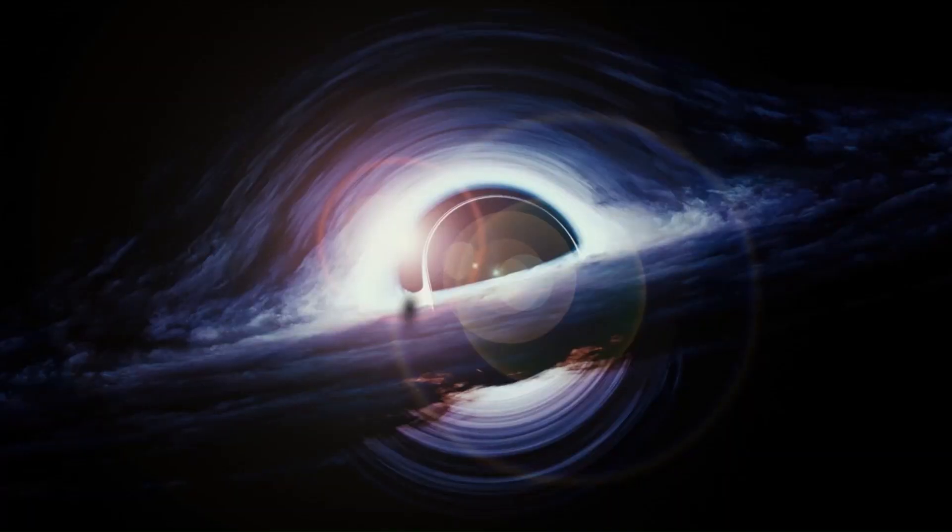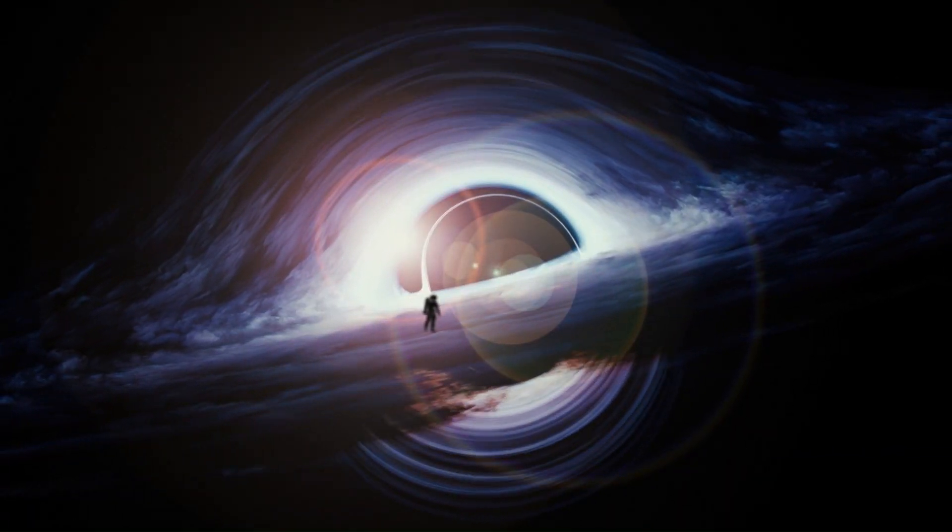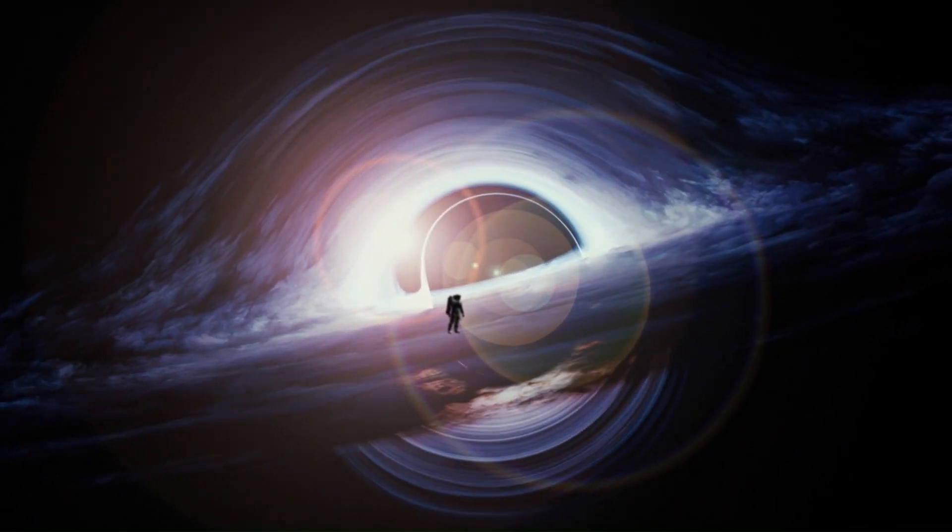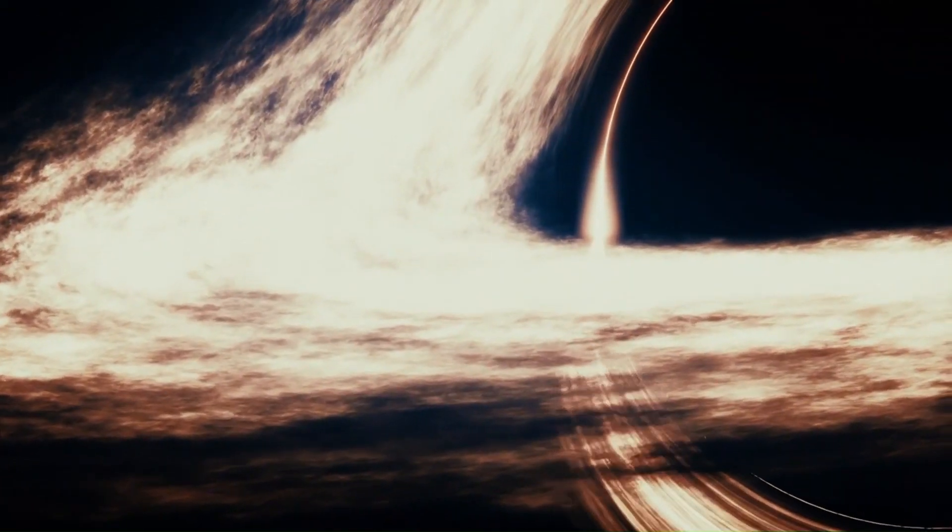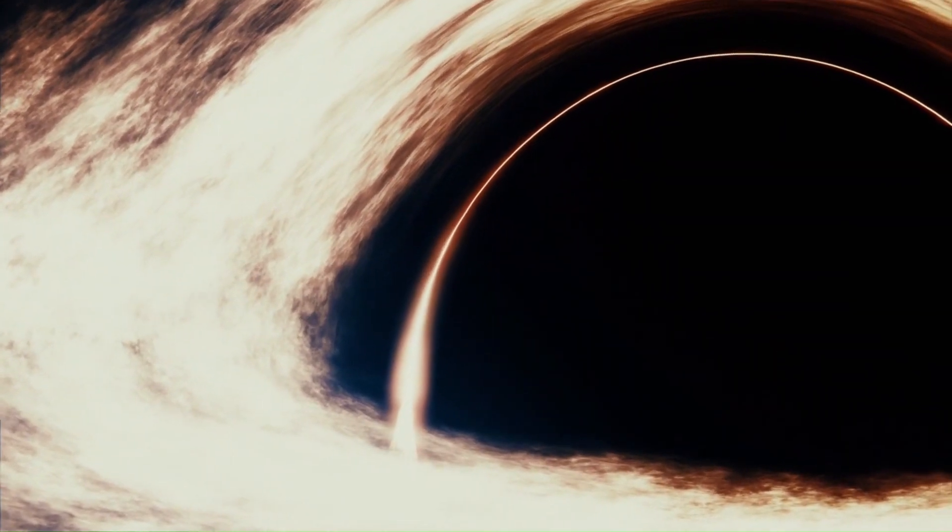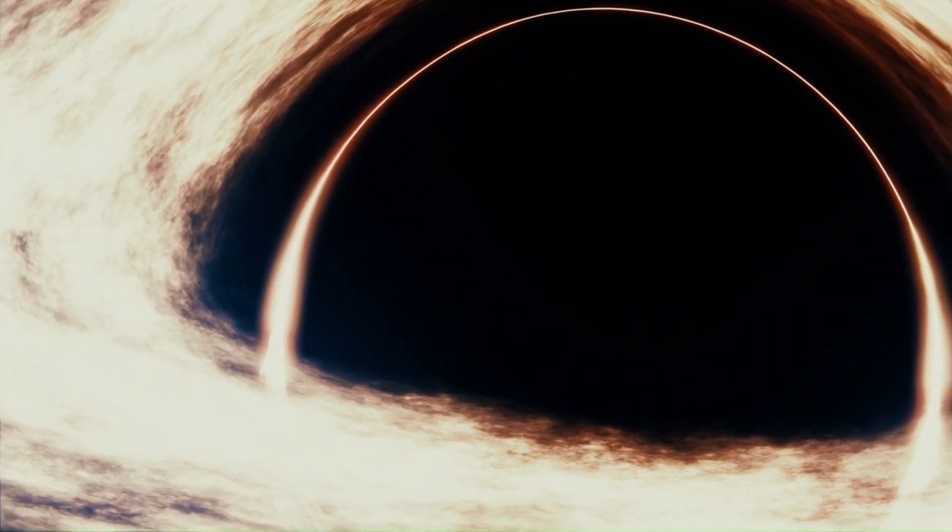But if somehow you could survive the black hole, the flow of time slows down. If you were to stand just outside the event horizon of Sagittarius A for one minute, 700 years would pass, because time passes so much slower in the gravitational field there than it does on Earth.